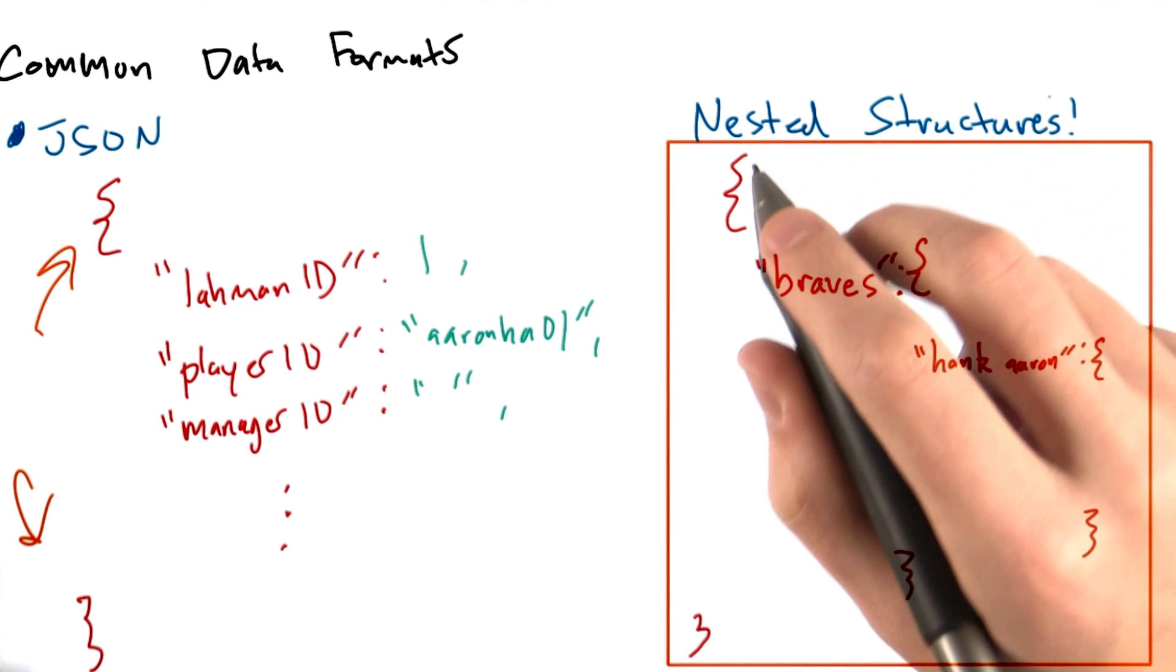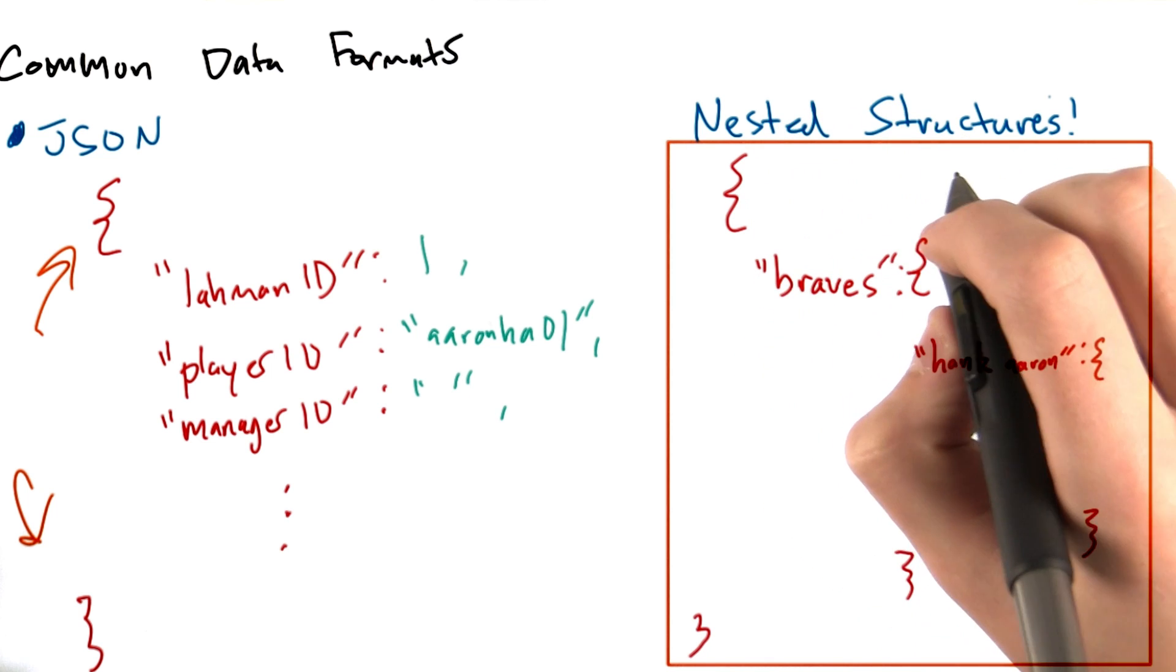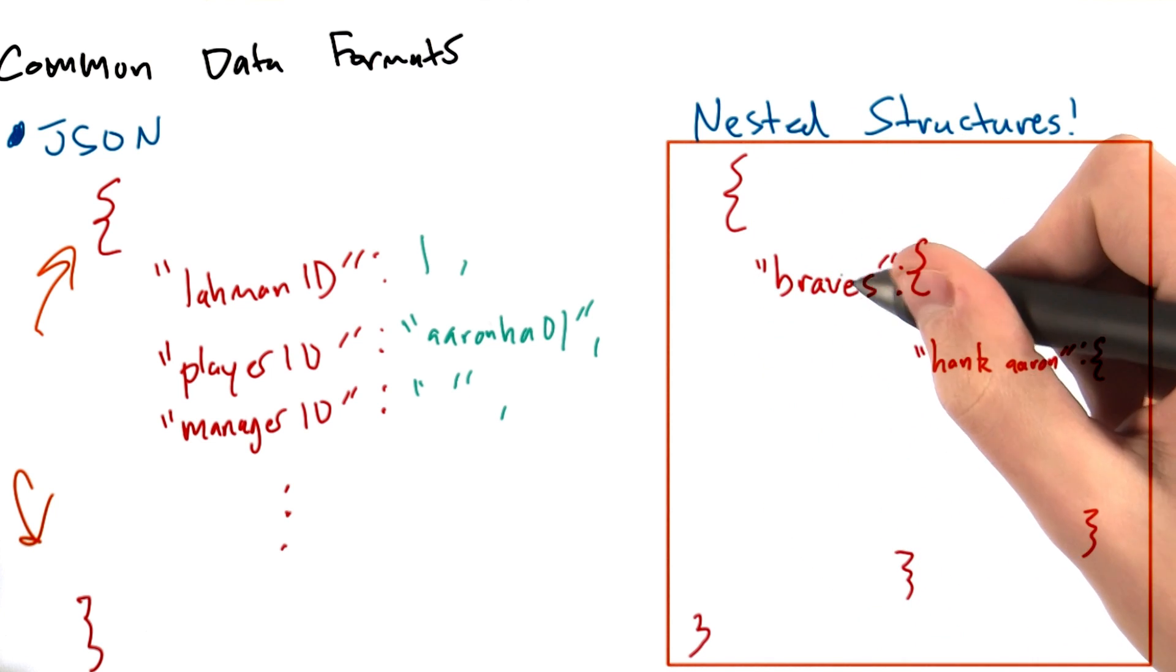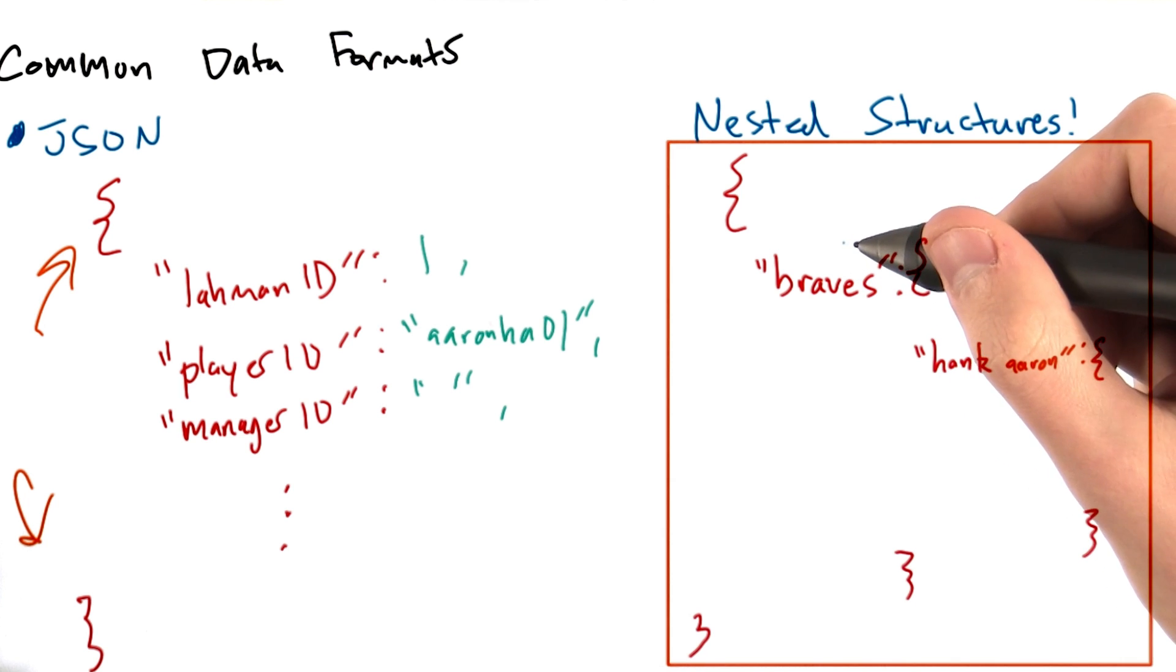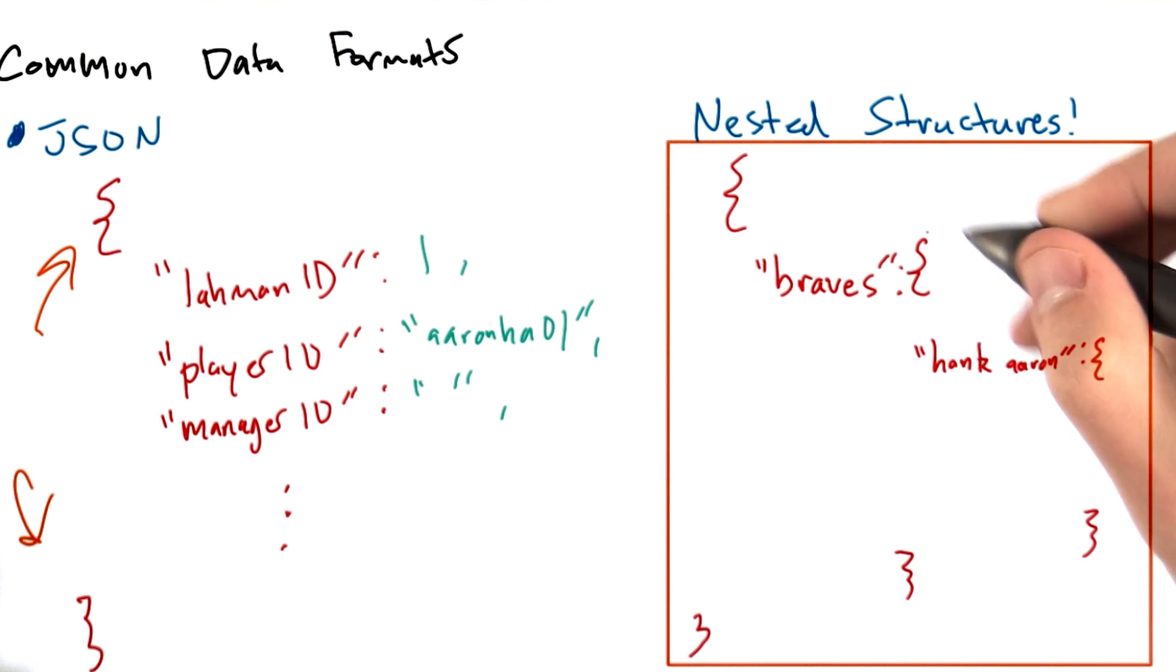I don't want to go into this in great detail, but you can imagine that the value corresponding to a particular JSON key, say braves, could itself be another JSON object. Here's what that might look like.